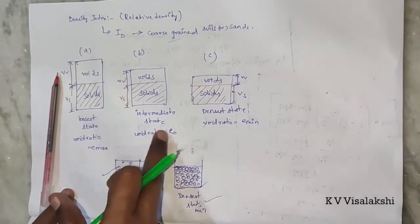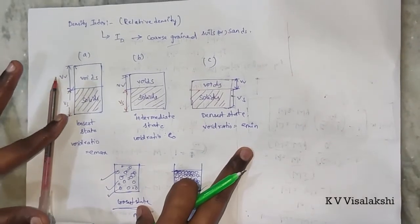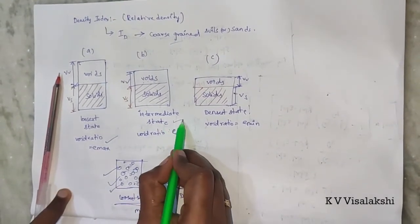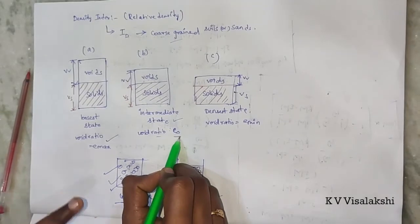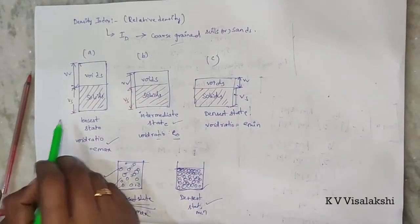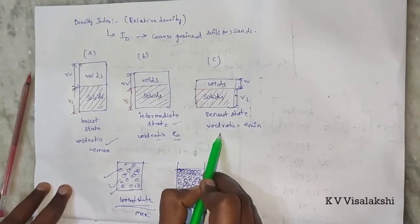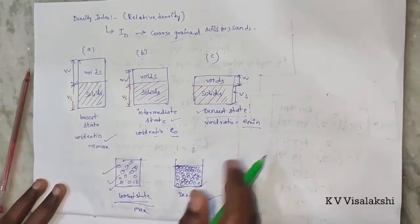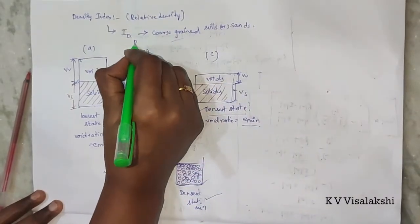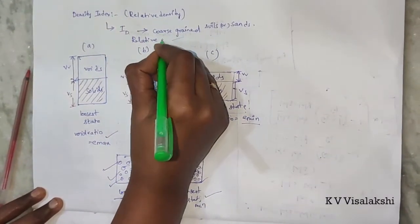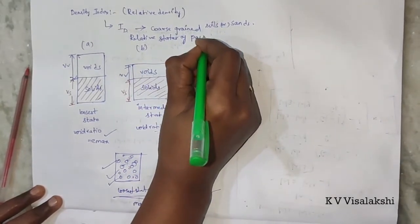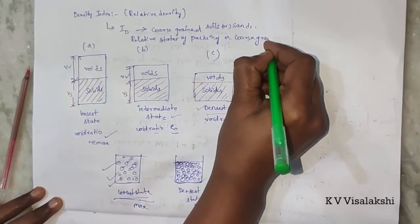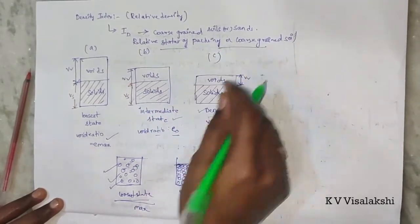So we have designated three aspects: in the loosest state the void ratio is at maximum; in the intermediate state the void ratio is E0, in equilibrium with respect to the volume of solids; and in the densest state the void ratio is minimum. This is nothing but the relative states of packing of a coarse-grained soil.